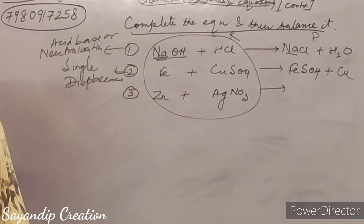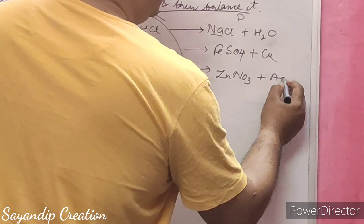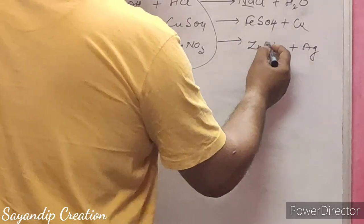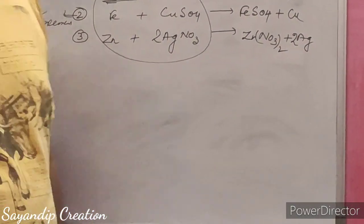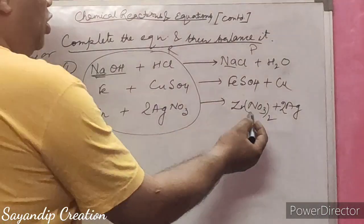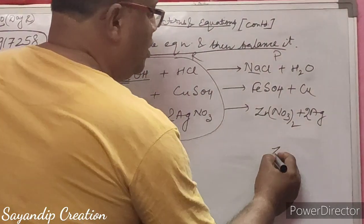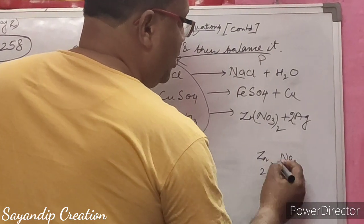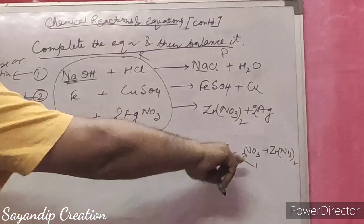Third: zinc reacts with silver nitrate to form zinc nitrate plus silver. The valency of zinc is 2 and valency of nitrate is 1, so by criss-cross rule it forms Zn(NO3)2. The equation Zn + 2AgNO3 → Zn(NO3)2 + 2Ag is not balanced at first; writing 2 before AgNO3 and 2Ag gives the balanced equation.